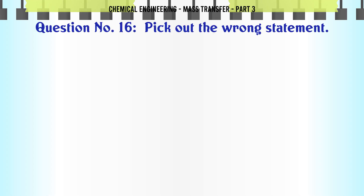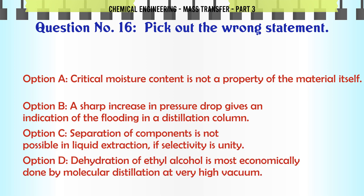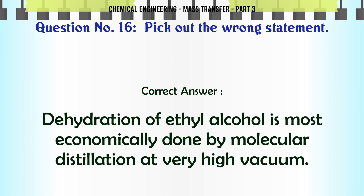Pick out the wrong statement. A) critical moisture content is not a property of the material itself. B) a sharp increase in pressure drop gives an indication of flooding in a distillation column. C) separation of components is not possible in liquid extraction if selectivity is unity. D) dehydration of ethyl alcohol is most economically done by molecular distillation at very high vacuum. The correct answer is: D.